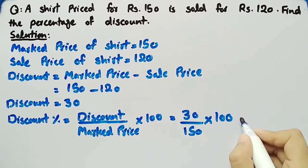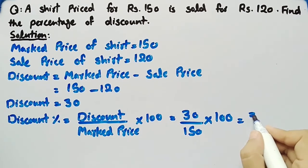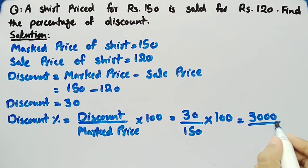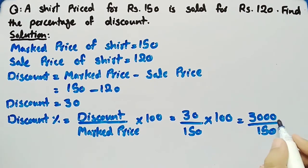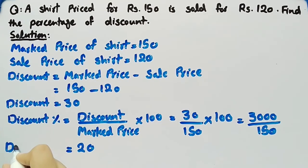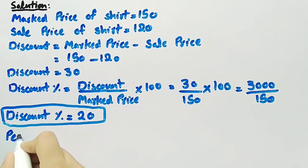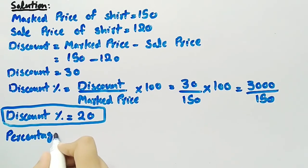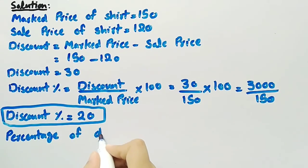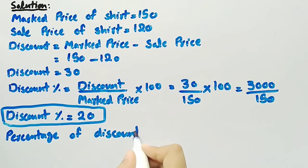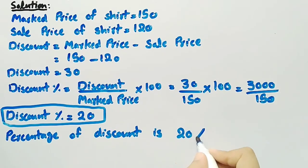When 30 is multiplied by 100 we get 3000, divided by 150. When we divide 3000 by 150 we get 20. So the discount percentage is equal to 20 percent, and this is the solution of this problem.